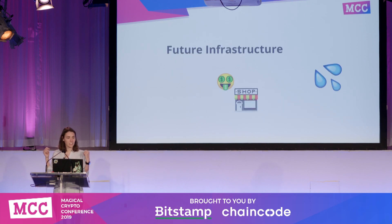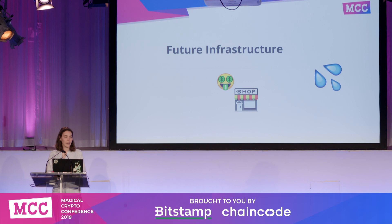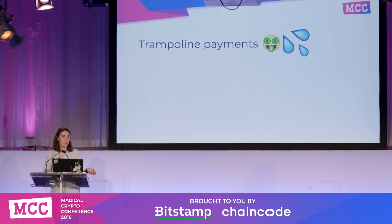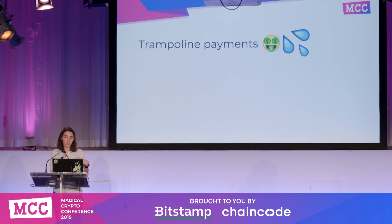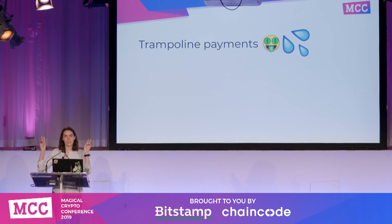I want to talk about some new projects in the pipeline on the spec side. The first is called trampoline payments — a proposal sent to the Lightning dev listserv last month by Pierre and Christian Decker. Basically, instead of a consumer needing to know exactly the route to the person they want to pay, they'd be able to delegate some of the pathfinding responsibility to a larger liquidity provider in the network, who can then help them get to their final destination.